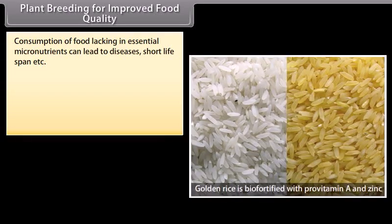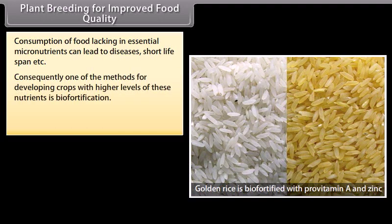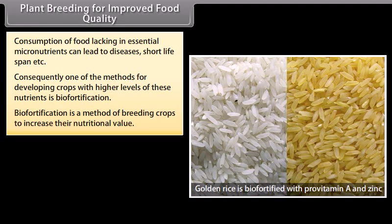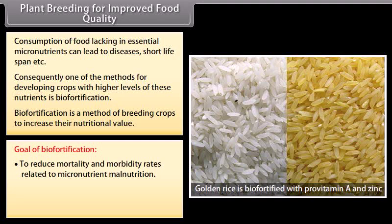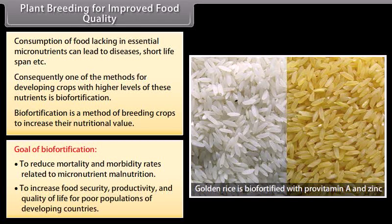Plant breeding for improved food quality: Consumption of food lacking in essential micronutrients can lead to diseases and short lifespan. One method for developing crops with higher levels of nutrients is biofortification. Biofortification is a method of breeding crops to increase their nutritional value. Its goals are to reduce mortality and morbidity rates related to micronutrient malnutrition, and to increase food security, productivity, and quality of life for poor populations in developing countries.